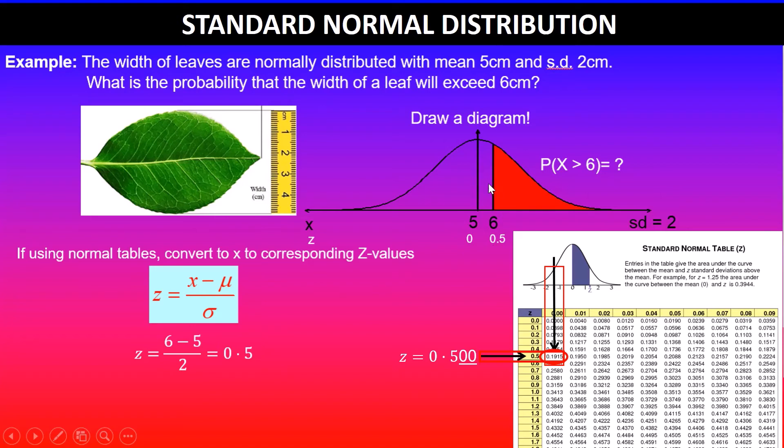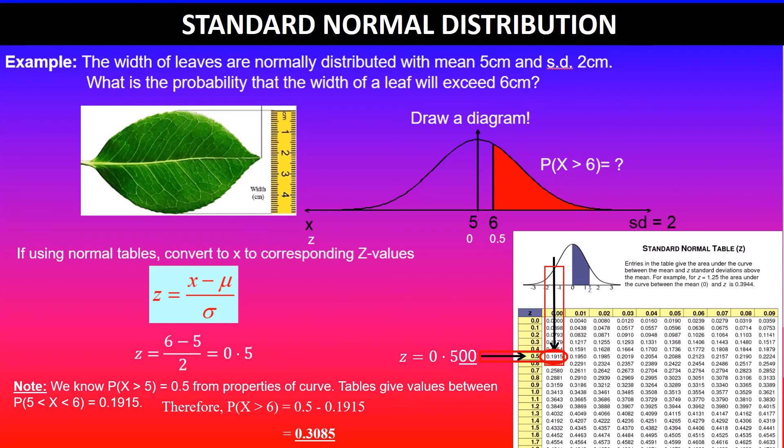But we're looking for the shaded area in red. We use properties of normal distribution: above 5 covers 50%, so P(x > 5) = 0.5. The table gives the value between 5 and 6, which is 0.1915. To find the shaded part, we calculate 0.5 - 0.1915 = 0.3085.